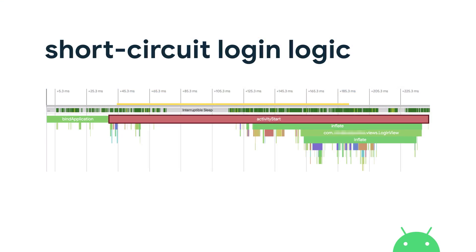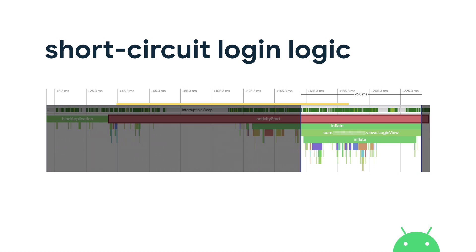In this trace, the app maybe did that refactor already and only has one activity starting. But inside their activity start, there's a big inflate section for a view called login view. There's no actual visible login page when I open this app, so it's possible that this developer is creating and inflating an entire login view and then hiding it when it's not being used, which is going to be most of the time. They probably aren't aware that it's having such an impact on app startup. This 76 milliseconds is actually quite significant. To solve this, they could potentially defer inflating those views until after checking to see if the user is logged in.